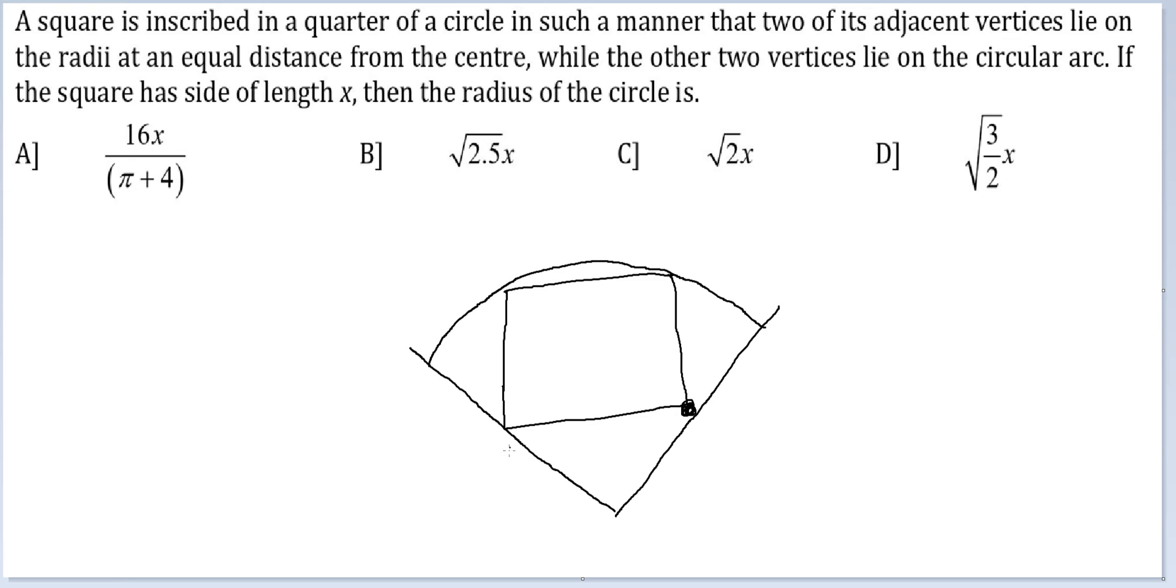Okay. So, this side is x. This side is x. I know these two lengths are equal. If these two lengths are equal, this angle will be 45 degrees. This will be 45 degrees. Because this is x, this length will be x by 2. This length will actually be x by 2.